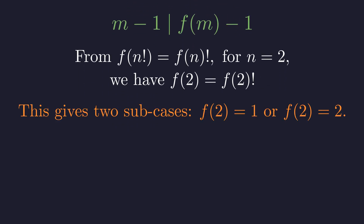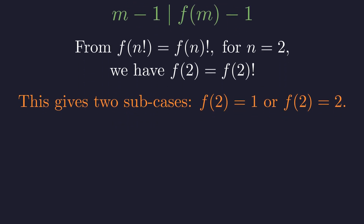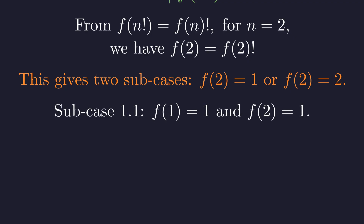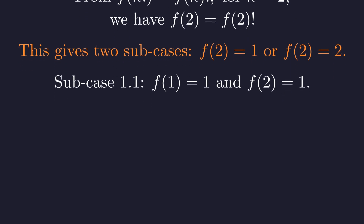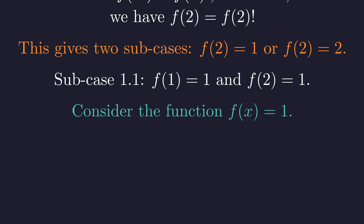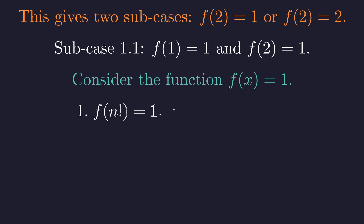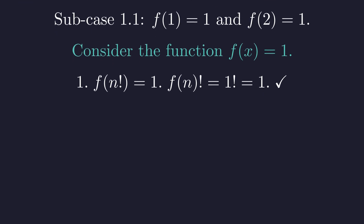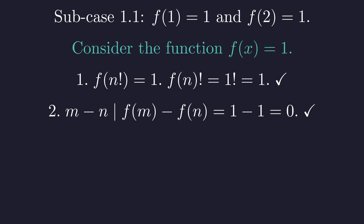Just as we did for f(1), the factorial condition on n = 2 implies that f(2) must be either 1 or 2. This splits our investigation into two subcases. Let's first assume f(2) = 1. The simplest function satisfying f(1) = 1 and f(2) = 1 is the constant function f(x) = 1. The first condition holds since both sides evaluate to 1, and the second holds because m minus n always divides 0. So f(x) = 1 is our first solution.